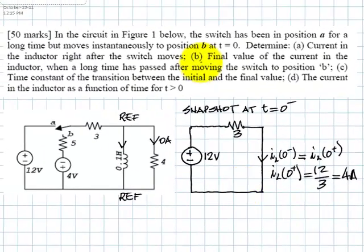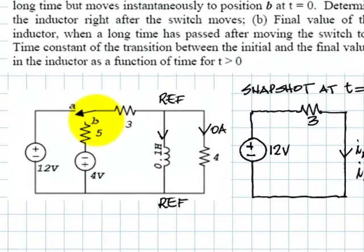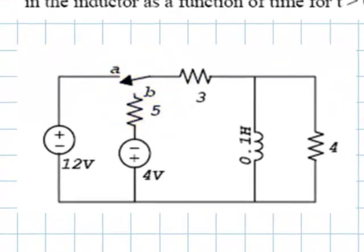Now, part B says, find the final value of the current in the inductor when a long time has passed after moving the switch to position B. In other words, now we move the switch over to B and we wait a long time. Part B asks, what is the final value of the current in the inductor when a long time has passed after we moved the switch from A to B?